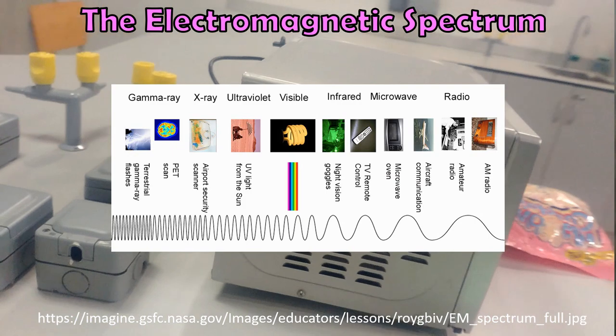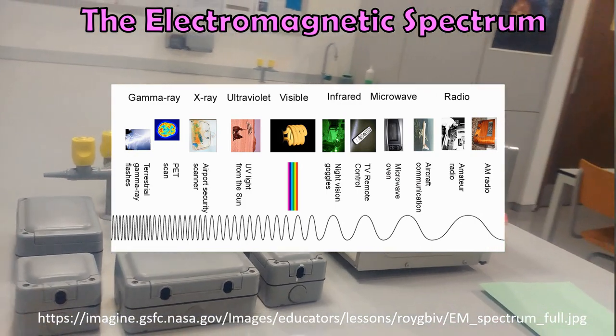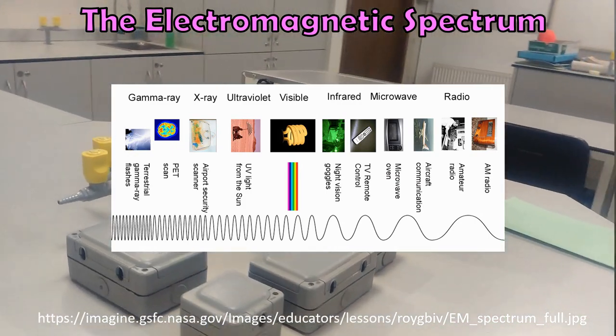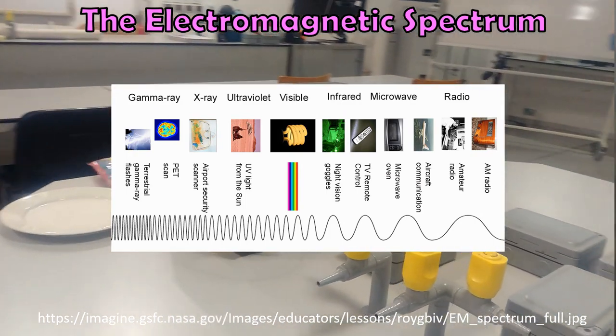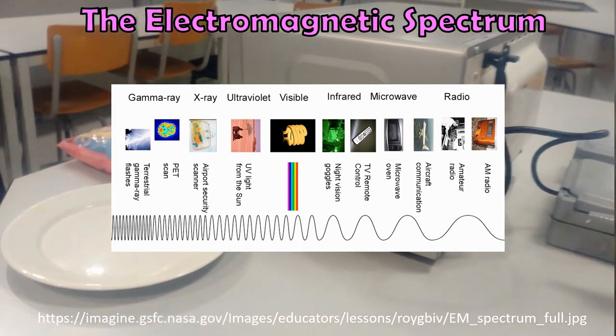Microwaves are part of the electromagnetic spectrum. In front of you now you see this family of waves. These waves are special because they can travel through a vacuum and they're transverse.